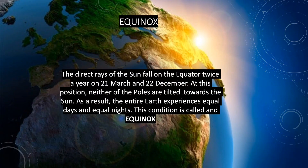Now let's talk about Equinox. Equinox is also one of the special positions of the earth. The direct rays of the sun fall on the equator twice a year: on 21st March and on 22nd September. At this position, neither of the poles are tilted towards the sun. As a result, the entire earth experiences equal days and equal nights.